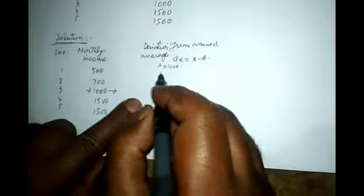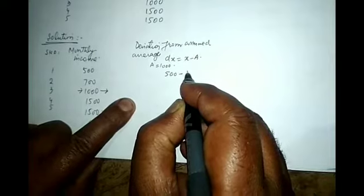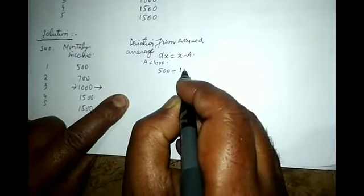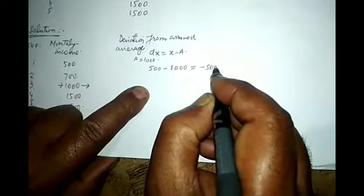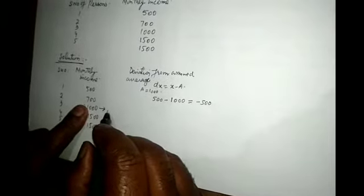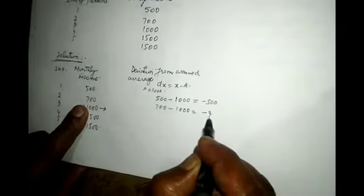A being equal to 1000. Now the value of x is 500 minus 1000, this will be equal to minus 500. 700 minus 1000, this will be equal to minus 300.